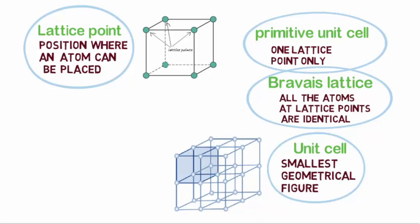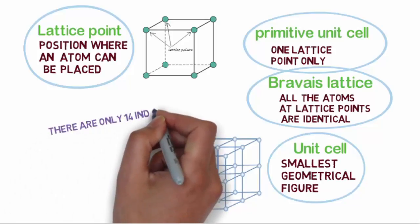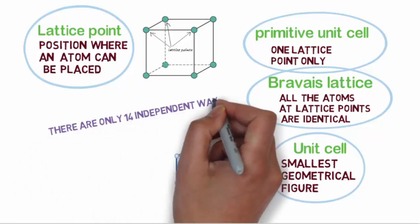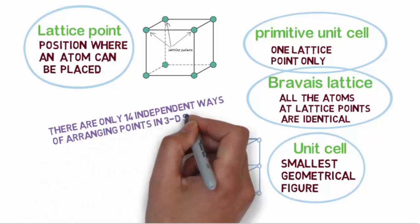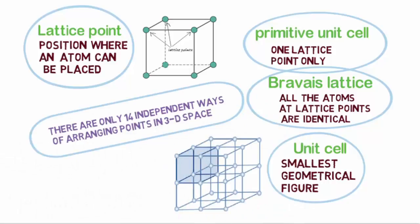When you arrange lattice points in a 3-dimensional space, you can find there are only 14 independent ways of arranging points in 3D space. These 14 Bravais lattices belong to 7 crystal systems, which we are going to talk about next.